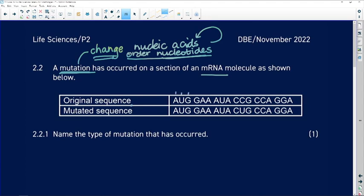AUG. Let's go to the mutated sequence, AUG. Okay, so mutation didn't occur there. GAA and GAA. So far, so good. No mutation.